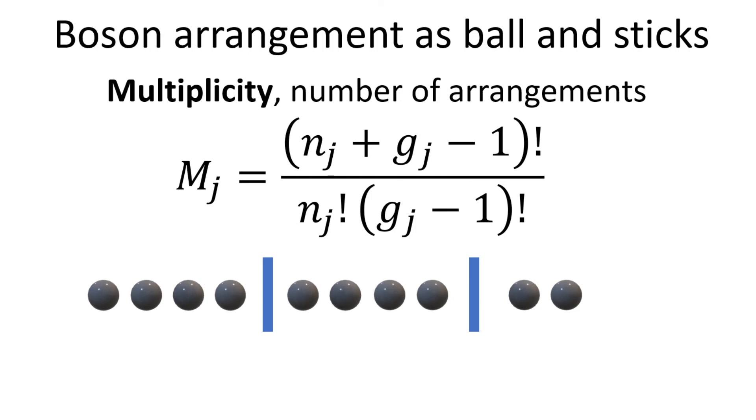Hence, the number of ways to arrange the bosons, or the multiplicity, will simply be the different ways to arrange these balls and sticks. Since the balls are indistinguishable, just like the sticks, we should use the combination formula.